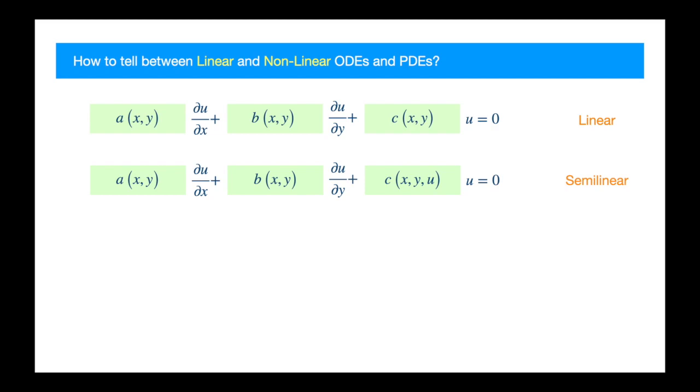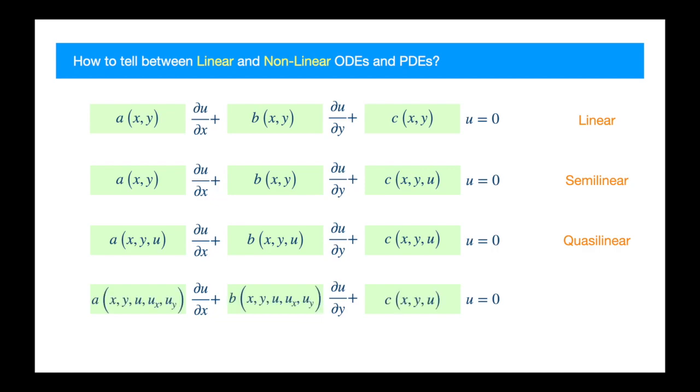Now assume the coefficients of the derivatives depend on u. And this is now quasi-linear. And if the coefficients of either the derivatives were to depend on the derivatives, then the equation will be nonlinear in the highest derivative. And this is then the fully nonlinear equation.